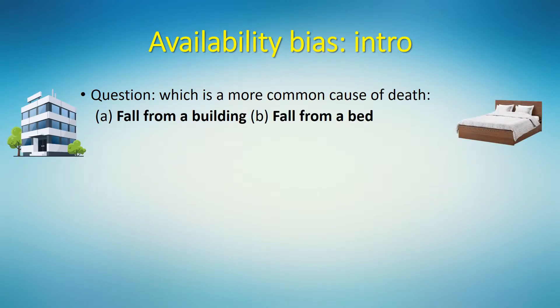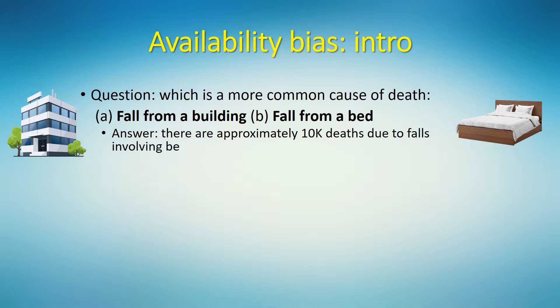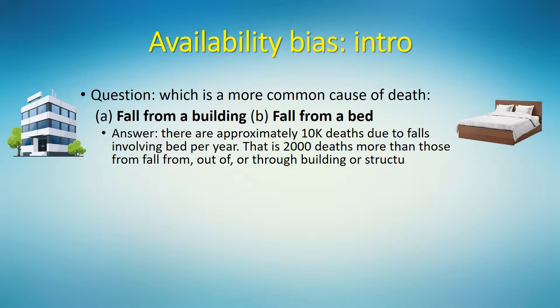What a stupid question, you might say. Of course fall from a building is more common. And that would be a wrong answer. According to official statistics from the US, provided by the Center for Disease Control and Prevention, as of the year 2016, there are approximately 10,000 deaths due to falls involving a bed per year. That is 2,000 deaths more than those from falls from, out of, or through a building or structure.